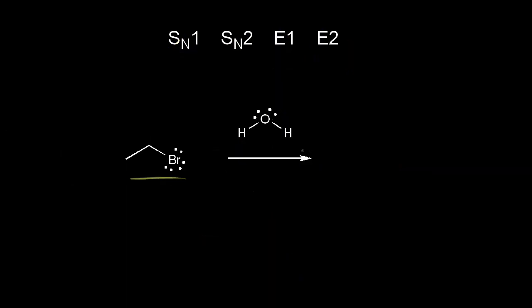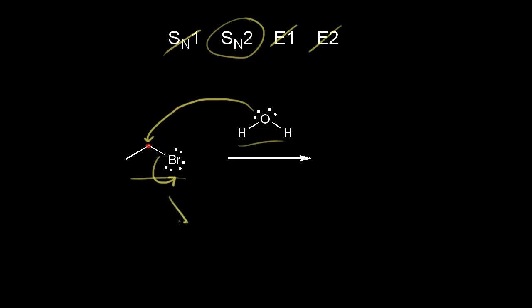For our last example, let's look at ethyl bromide reacting with water. We know it's not SN1 and not E1, so we're deciding between SN2 and E2. Water is a weak nucleophile and a weak base, and since water is a weak base, E2 is out. So this must be an SN2 reaction. Our nucleophile attacks our alkyl halide and a bond forms between the oxygen and this carbon in red. These electrons come off onto the bromine to form the bromide anion. A lone pair of electrons on oxygen forms this bond, and the oxygen is still bonded to two hydrogens, giving the oxygen a plus one formal charge.